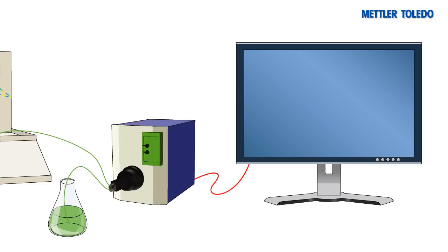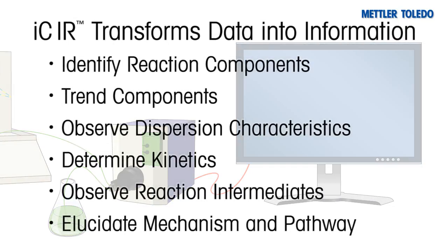With the collection of infrared data comes the analysis of the data to transform infrared-specific information into chemical information. ICIR is a comprehensive reaction analysis software that allows users to easily identify reaction components, trend these components, observe dispersion characteristics, determine kinetics, determine reactive intermediates, and mechanistic pathways all in real-time.